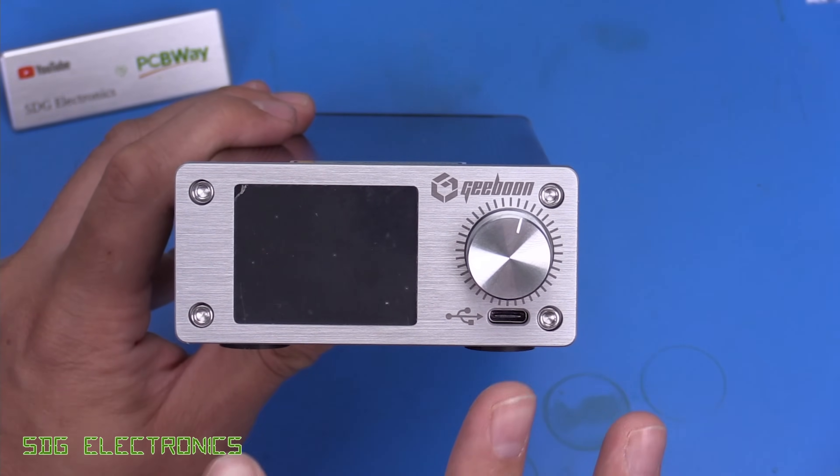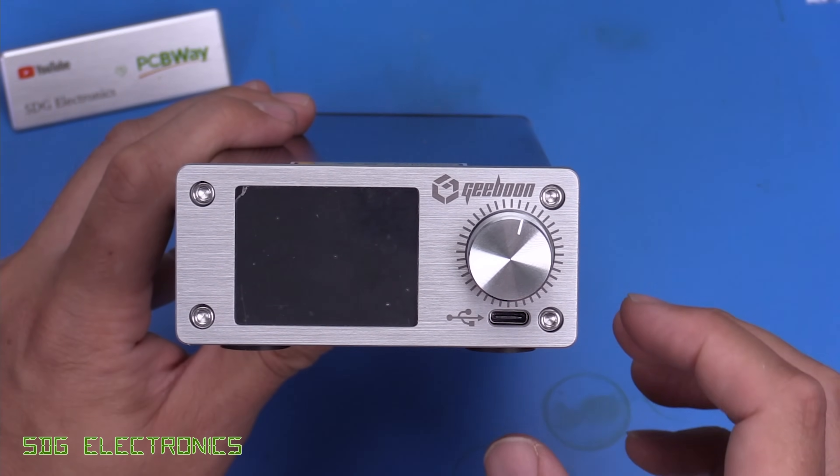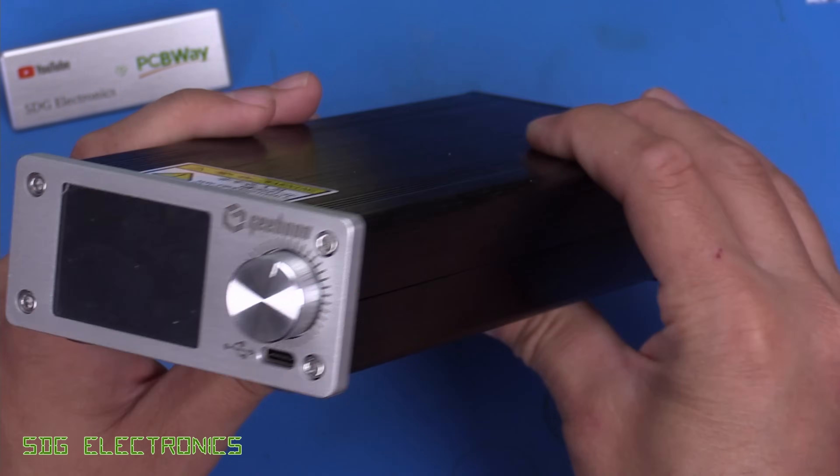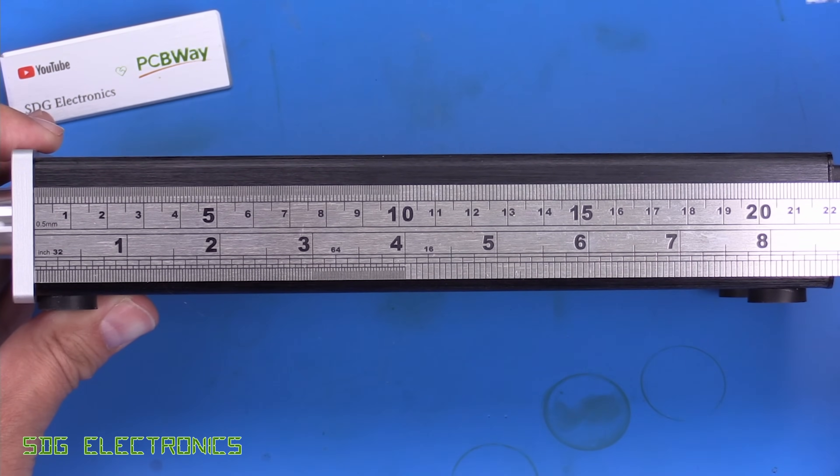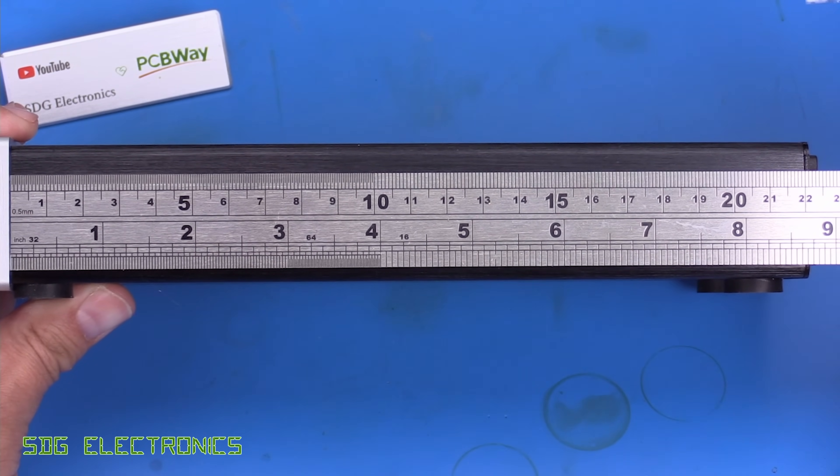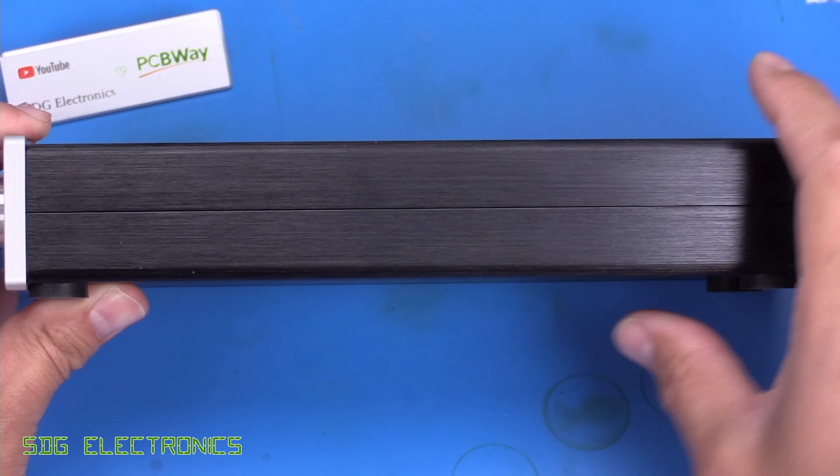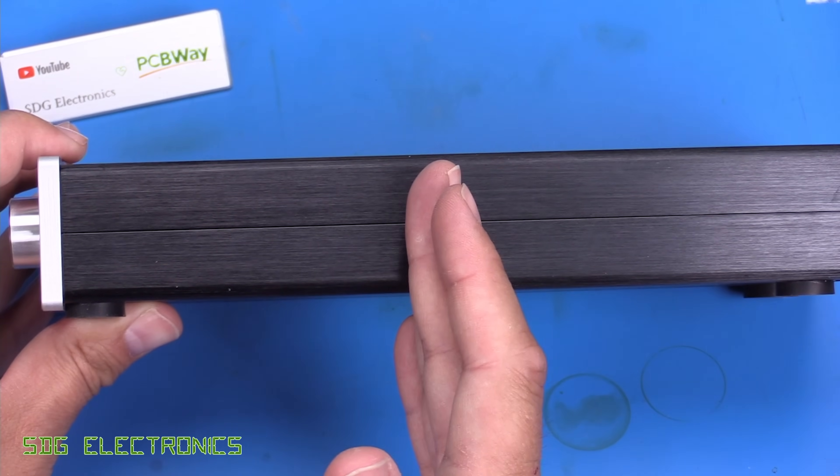So this all looks very similar to those T12 type soldering stations that we used to look at a lot. The only difference really is the depth on this thing is absolutely huge. If we have a look at the measurements, it's about 220 millimeters long, or nearly nine inches. So really quite big in comparison. The ones that we normally see are about half of that.